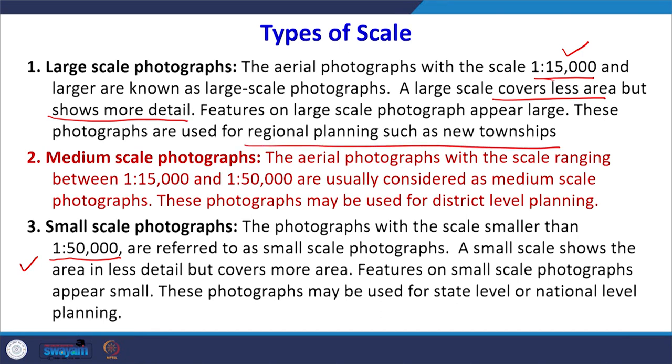The second category is medium scale photographs, with a scale ranging between 1:15,000 and 1:50,000. The area covered will be more than in large scale photographs, but the amount of detail will not be as good. These photographs are used for district level planning when the area is large.